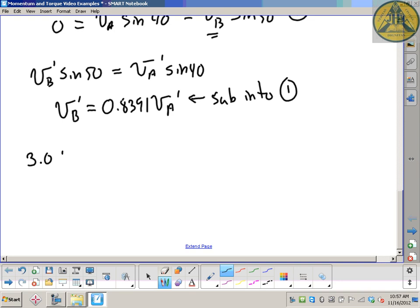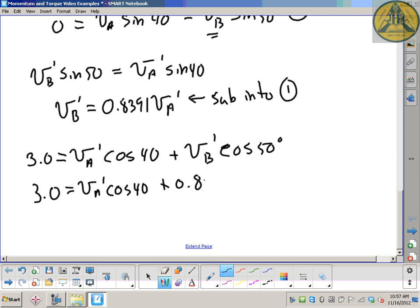Equation 1 is 3 equals VA prime cos 40 plus VB prime cos 50. Now I do my substitution. 3 equals VA prime cos 40 plus 0.8391 VA prime. And remember, that's my substitution step. I still have a cos 50 out here. Evaluating the cosines, making the numbers easier to visualize. So 0.766 VA prime plus 0.5394 VA prime.